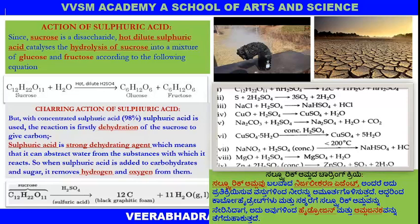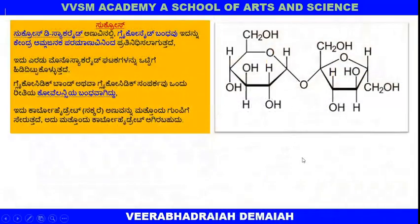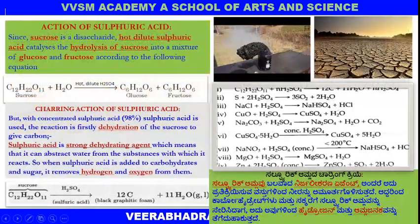Sucrose undergoes a charring reaction with concentrated sulfuric acid. A vigorous reaction takes place, resulting in the loss of carbon. Because of this vigorous reaction, a black graphitic foam comes out from the beaker when you mix sugar — sucrose — with concentrated sulfuric acid. This is the action of sulfuric acid on sucrose.